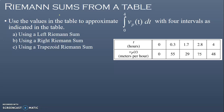The question asks us to use the values in the table to approximate this definite integral with four intervals as indicated by the table. We've got time values of 0, 0.3, 1.7, 2.8, and 4, and then we've got velocity values at each of those times. A side note is that if we integrate velocity, we're going to get distance, so this would approximate the distance traveled.